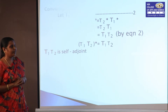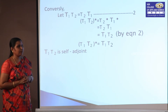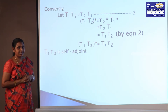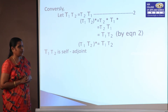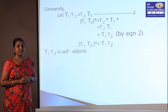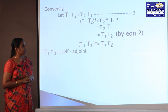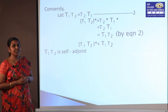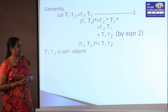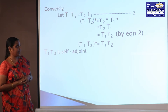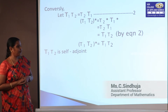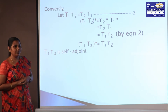In Case 2, conversely, we assume T₁T₂ = T₂T₁ — mark it as equation 2. We consider (T₁T₂)* and apply (AB)* = B*A*, giving T₂*T₁*. Using equation 1, this becomes T₂T₁. By equation 2, T₂T₁ = T₁T₂. Therefore (T₁T₂)* = T₁T₂, so T₁T₂ is a self-adjoint operator.